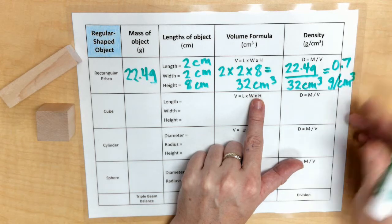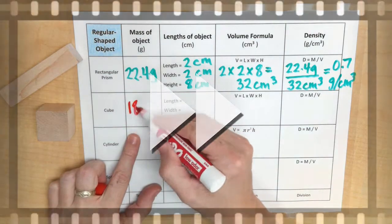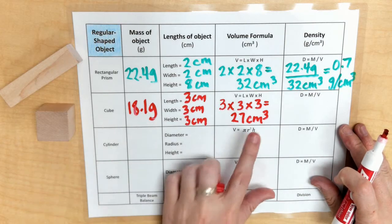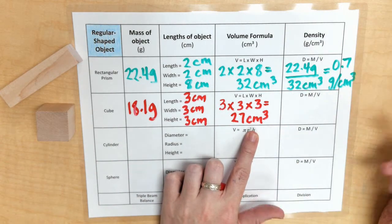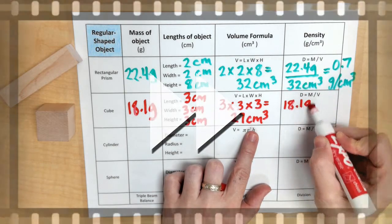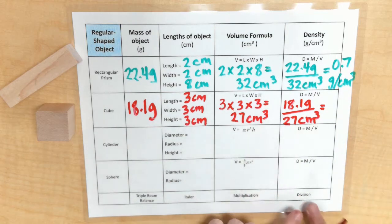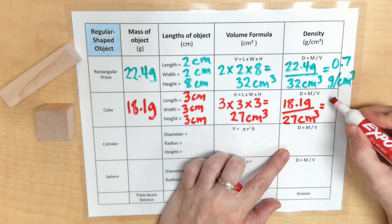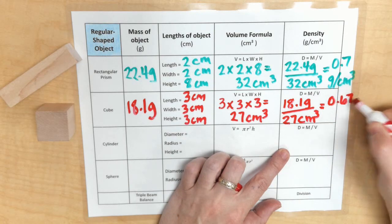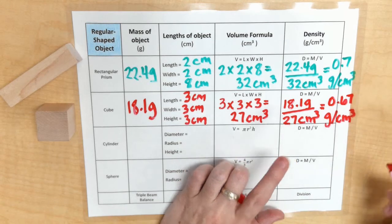Now with my cube, I have my mass, I have my volume. I can now plug those measurements into my formula for density. And when I do those calculations, that division, I know that my density of my cube is 0.67 grams per centimeters cubed. And that is rounded to the nearest hundredth.